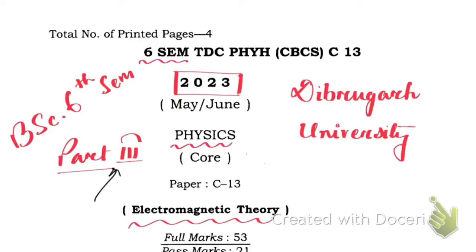Hello friends, this is part 3 of Dibrugarh University BSc 6th semester paper solution 2023, paper C-13 Electromagnetic Theory. We have already solved question number 1 and question number 2, all the questions in those sections. Today we are going to solve question number 3 and question number 4.